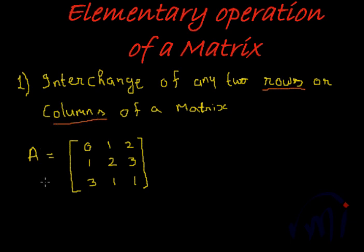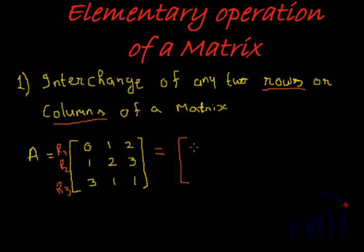What it means is if A is a matrix with row one, row two, and row three — three rows — the nature of this matrix does not change if we interchange r1 with r2. So r1 takes the place of row two, and row three remains the same.